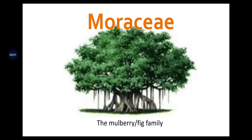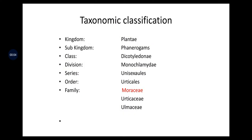Moraceae is the fig or mulberry family. It belongs to kingdom Plantae, sub-kingdom Phanerogamae, class Dicotyledonae, division Monochlamydae, series Unisexuales, order Urticales. Urticales, Moraceae, and Ulmaceae are the three members of the order Urticales.